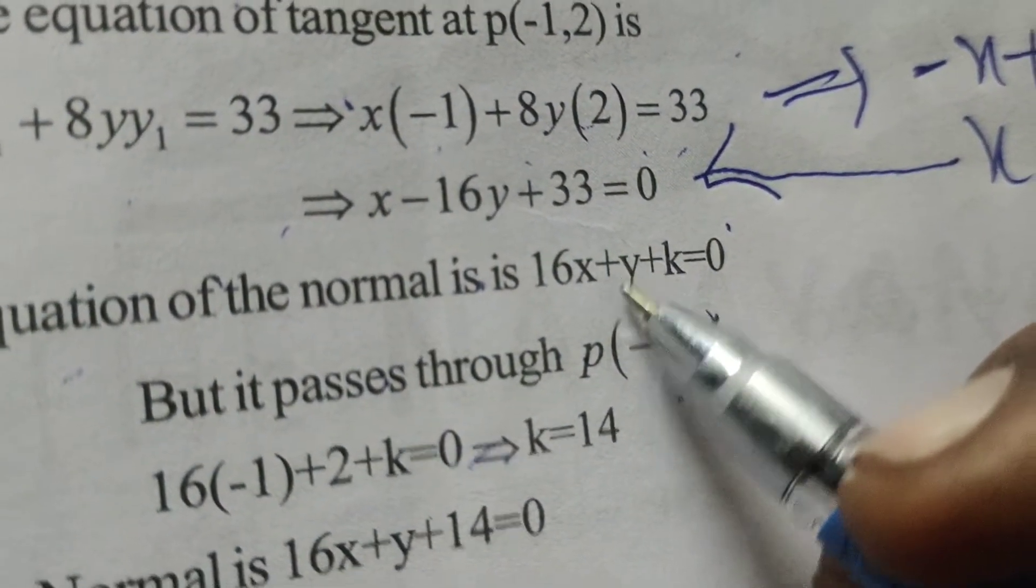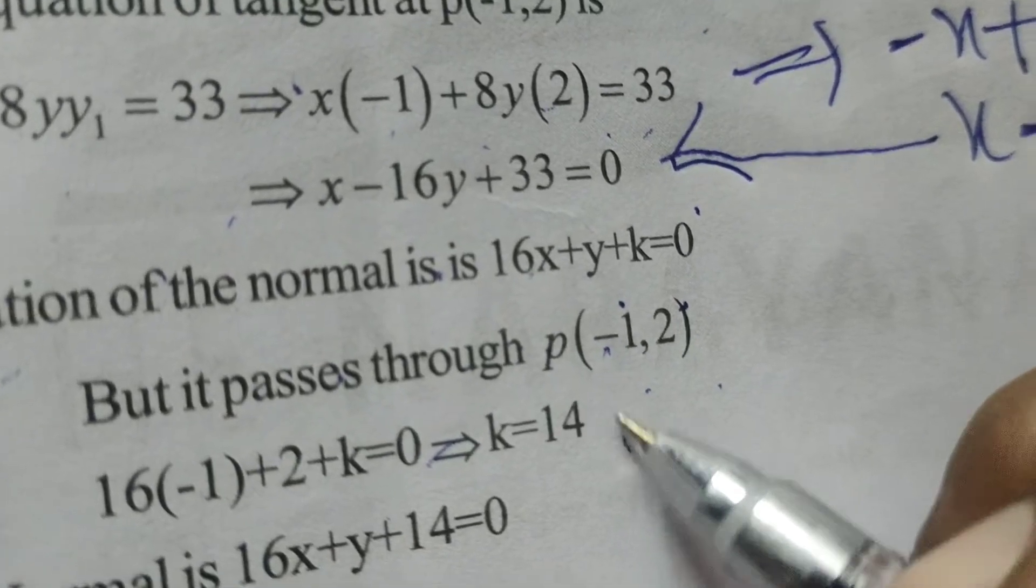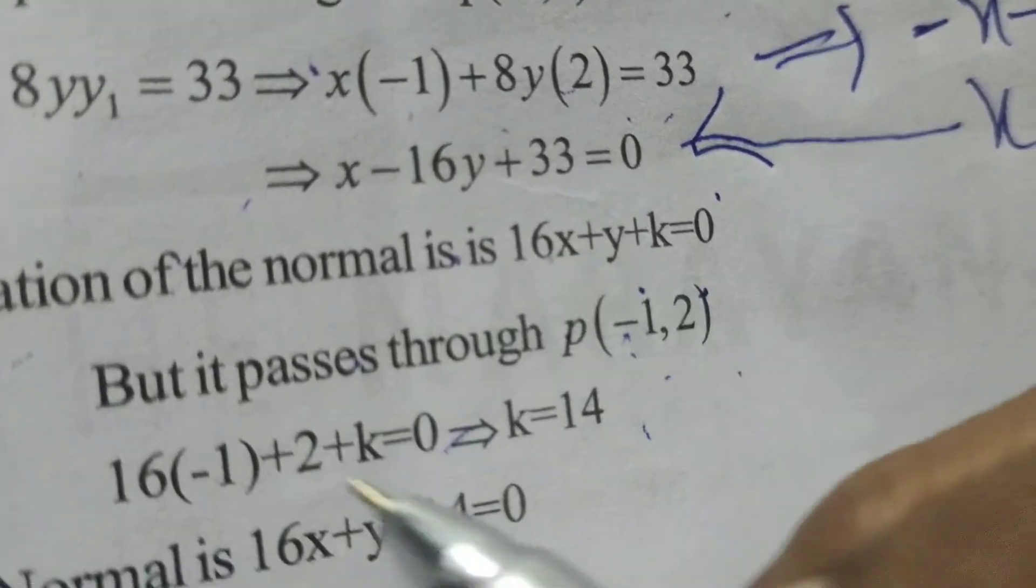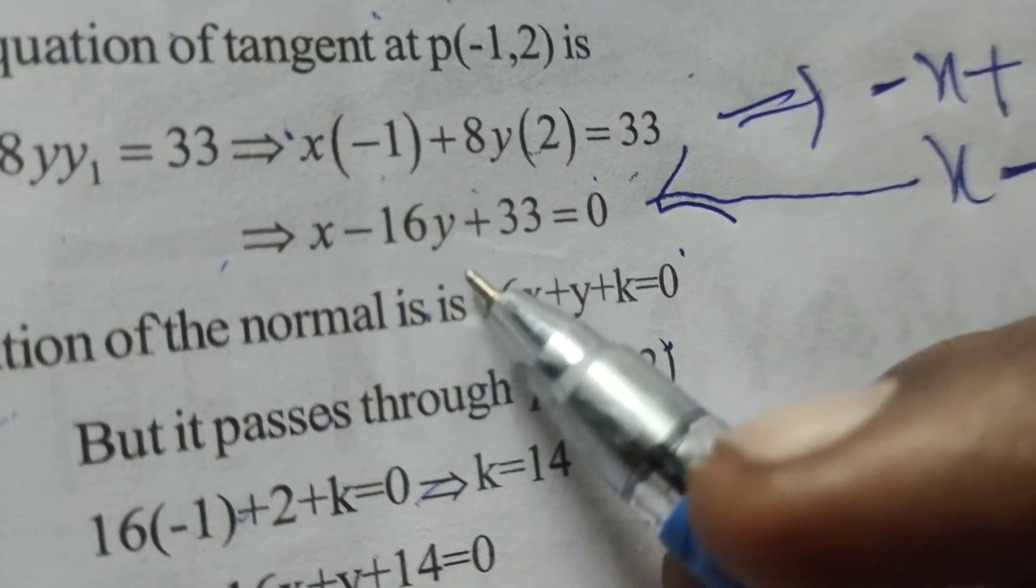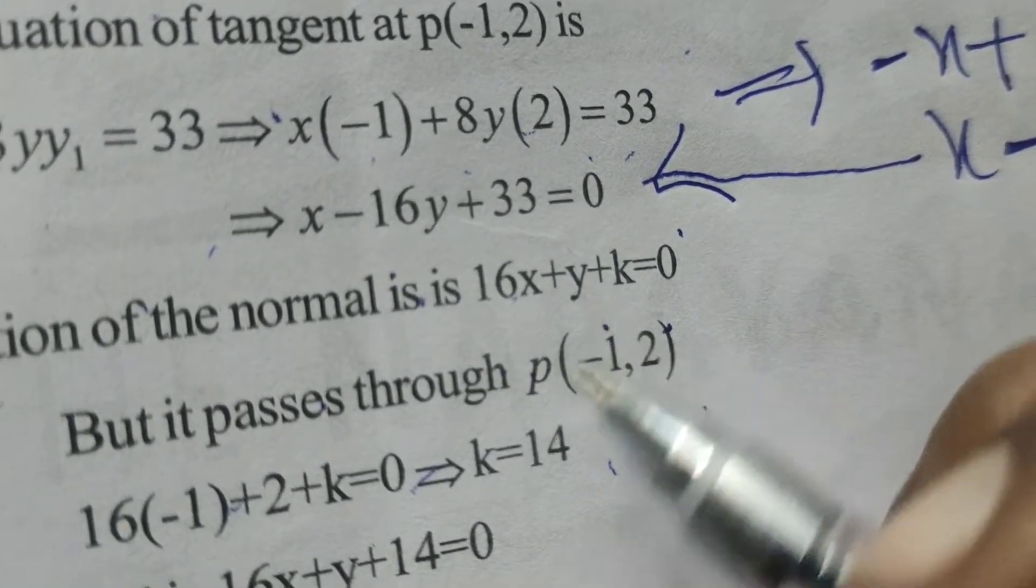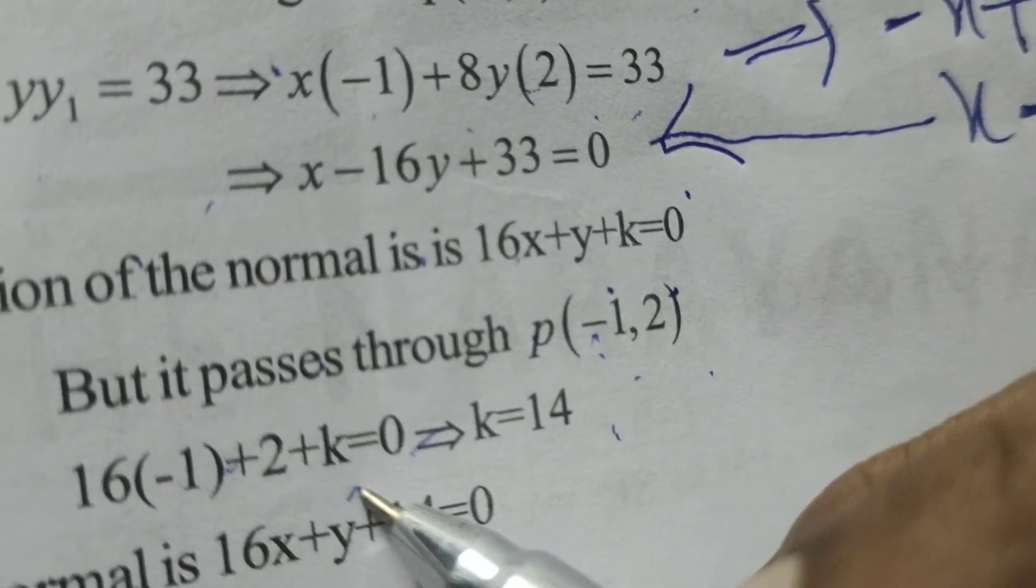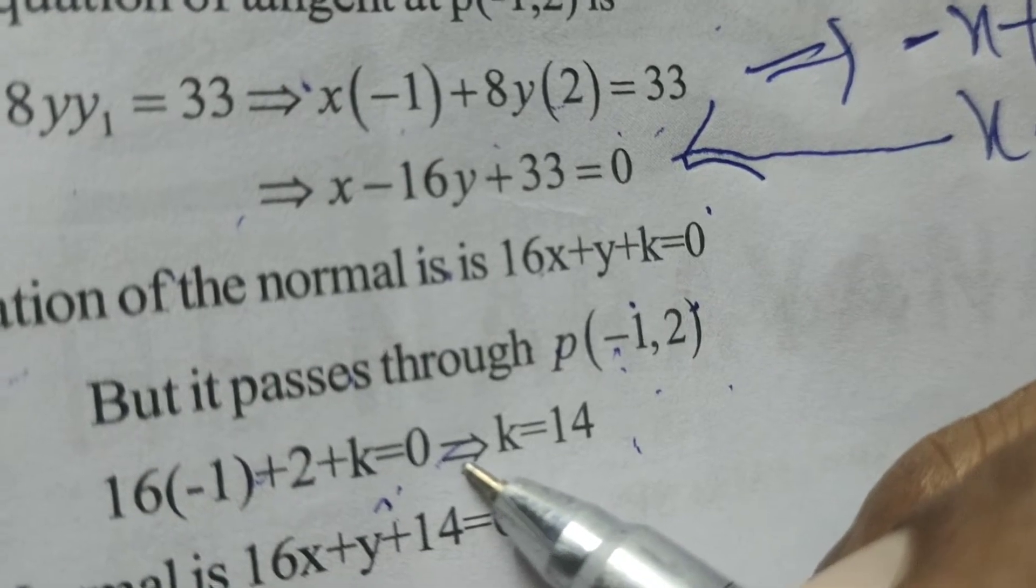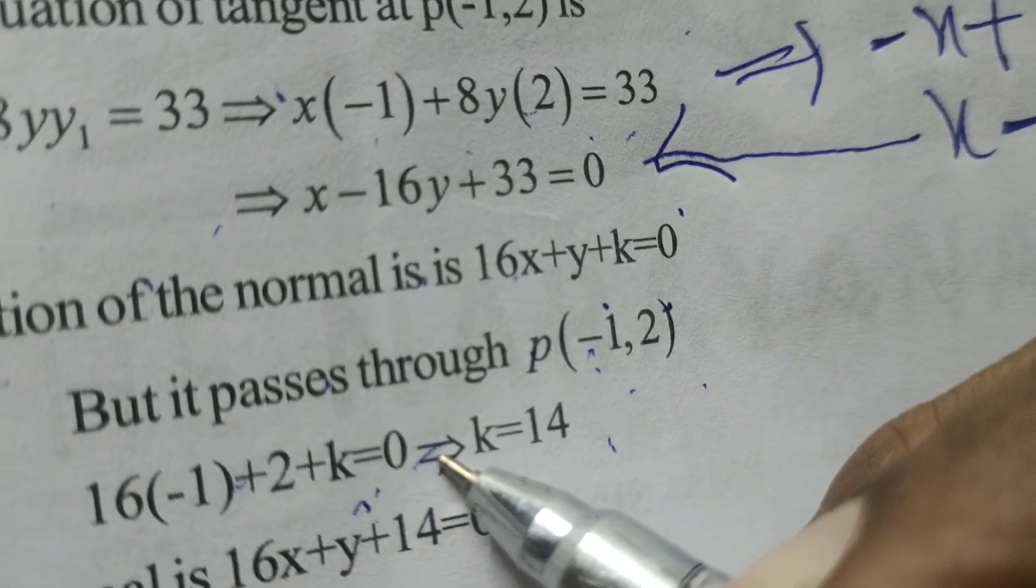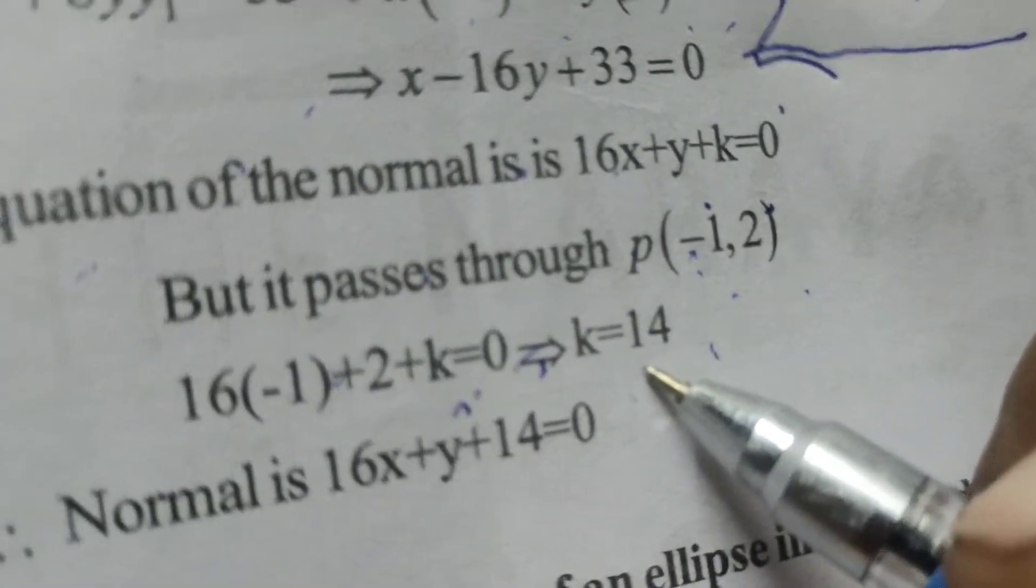substitute: 16(-1) + 2 + k = 0. That is, k = 14.